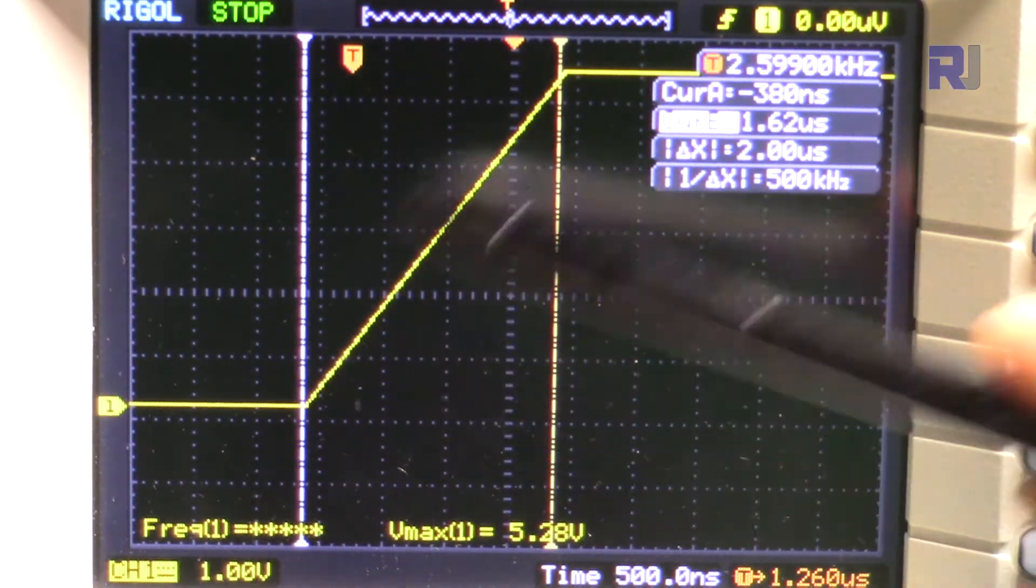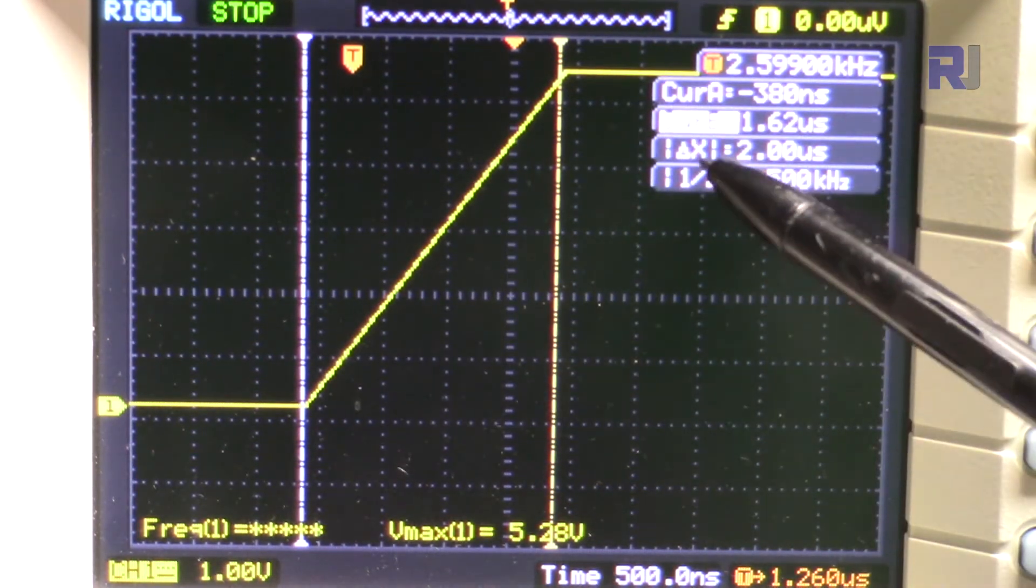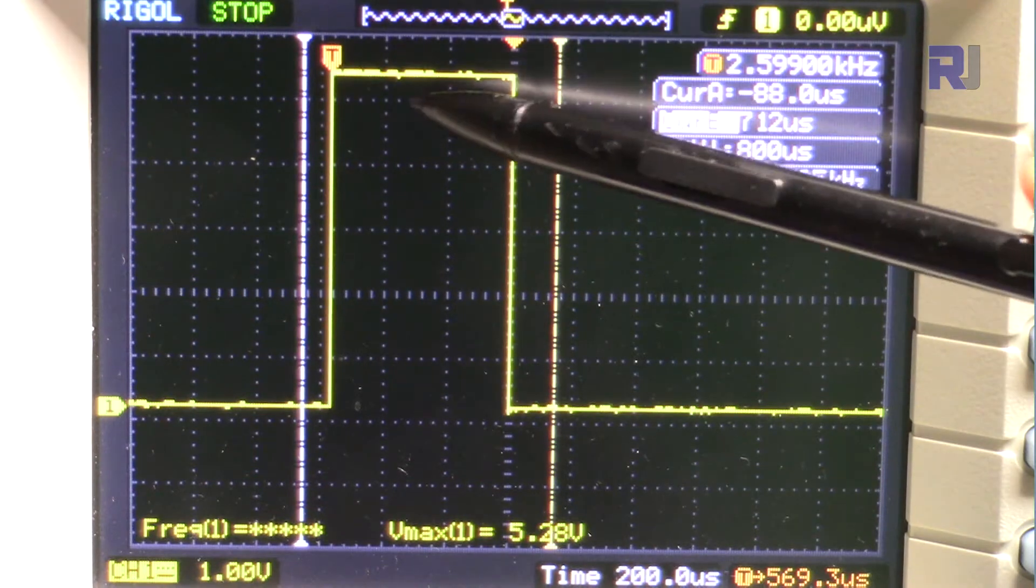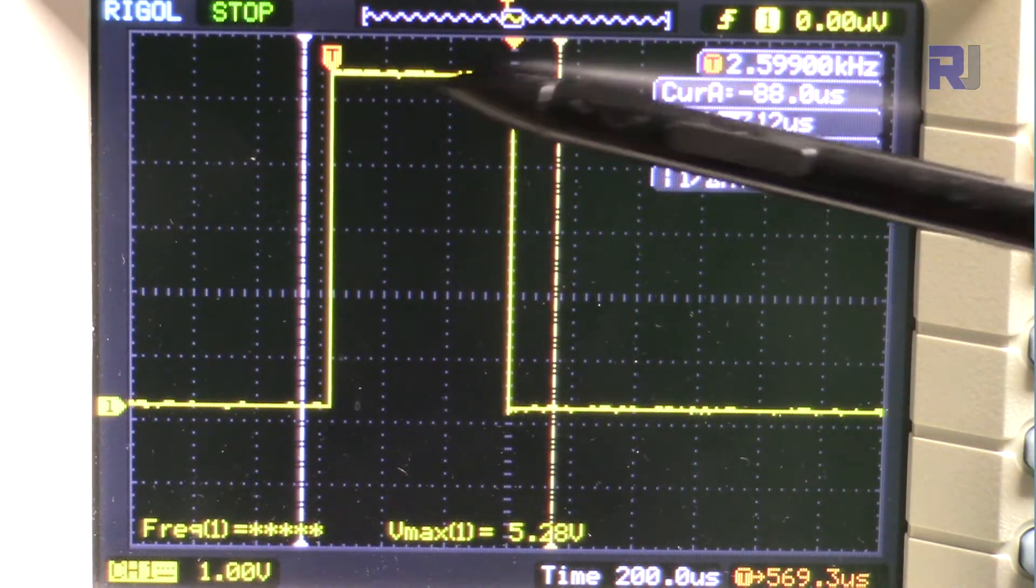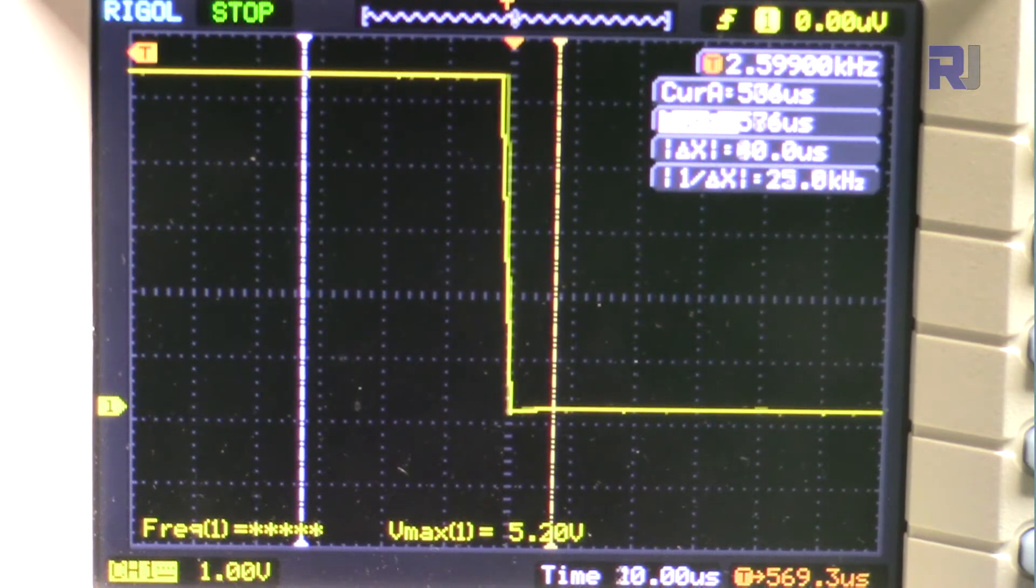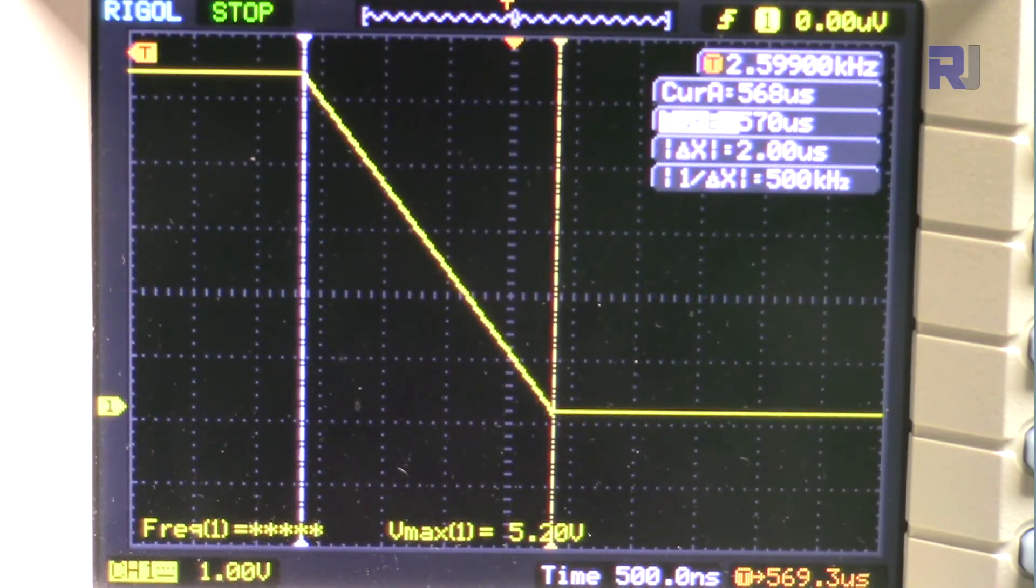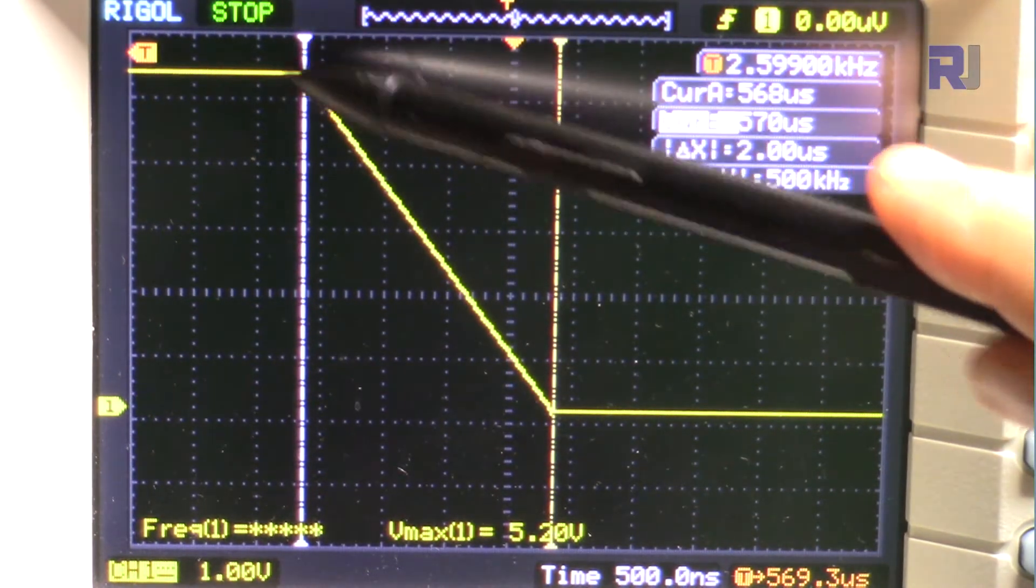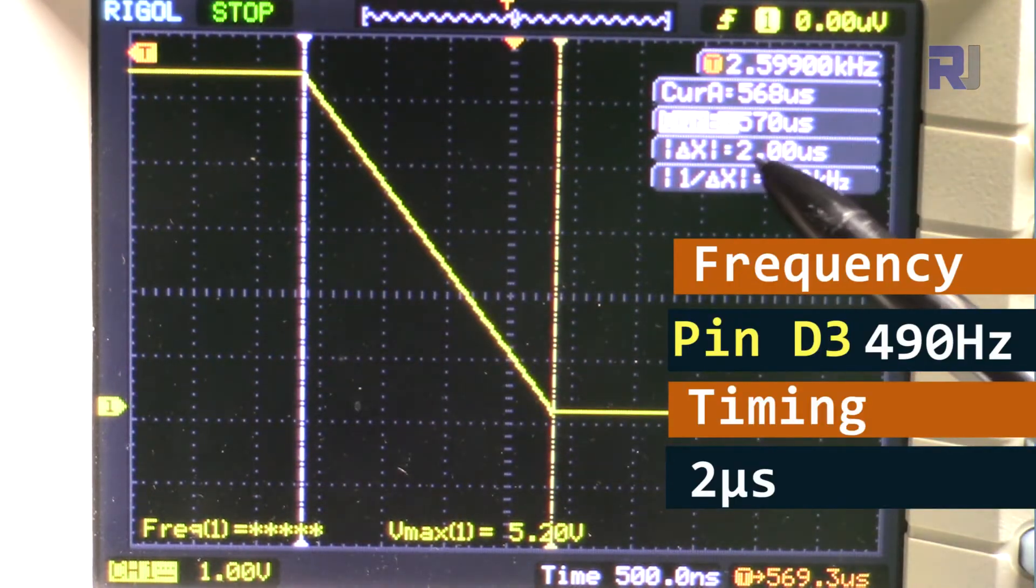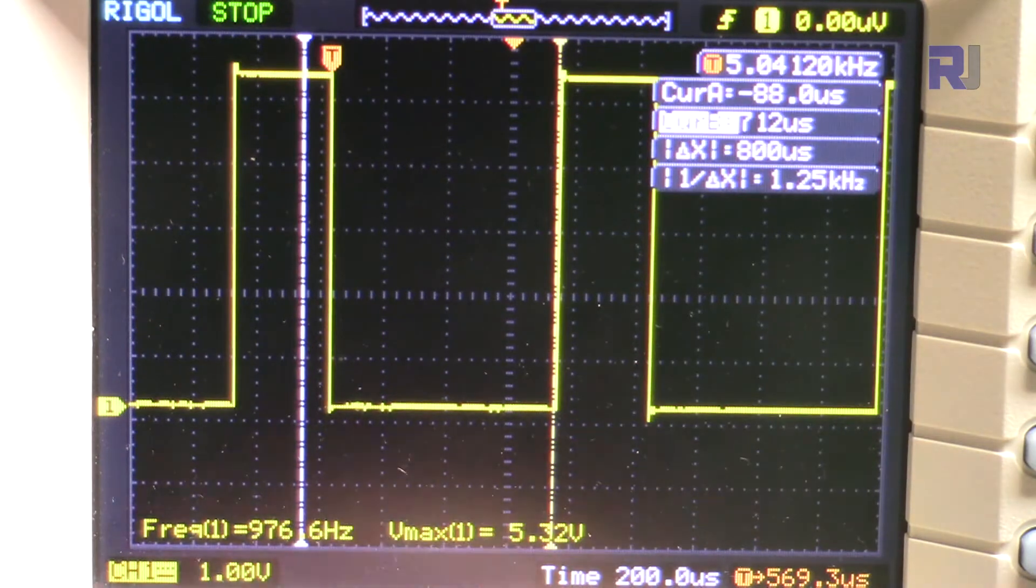And here when it goes from here to here, this Delta X1 shows 2 microseconds. That is the rising time. Falling time is the time that the signal goes from high to low. It takes some time that it goes down.